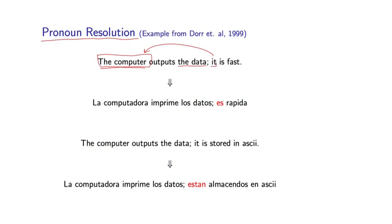And so pronoun resolution is the problem of taking a pronoun like it and deciding which noun phrase in the context it refers to. In this particular translation into Spanish, it is then translated as es. Okay, so now let's look at a second example. It's the computer outputs the data. It is stored in ASCII. Again, there are two potential noun phrases that it could refer to. And in this case, it's very clear from the context that it refers to the data because it makes sense for the data to be stored in ASCII. It doesn't make sense for the computer to be stored in ASCII.